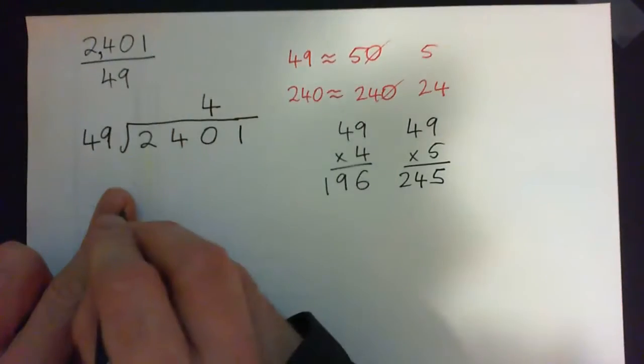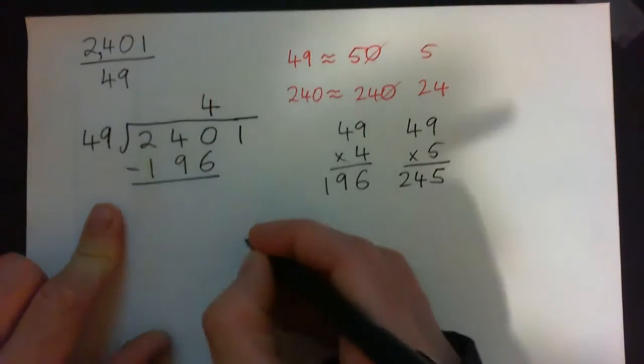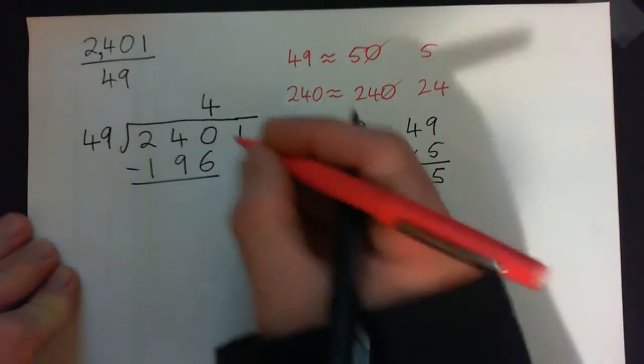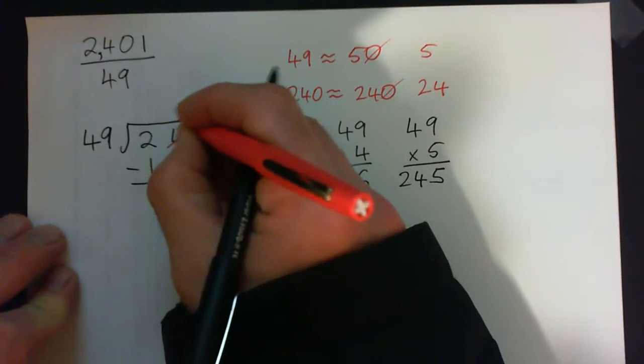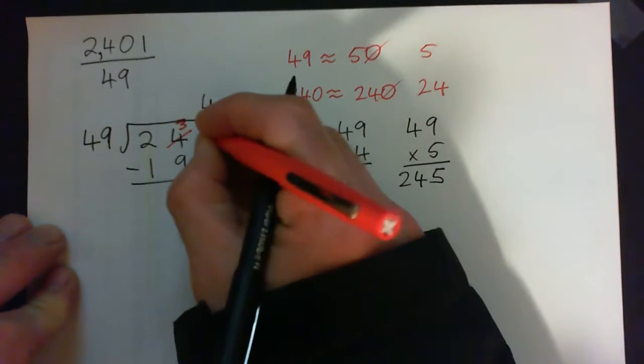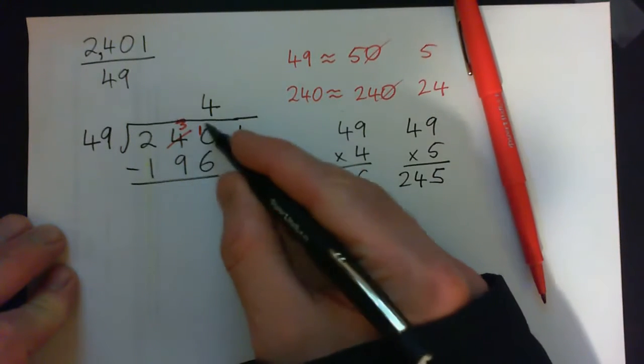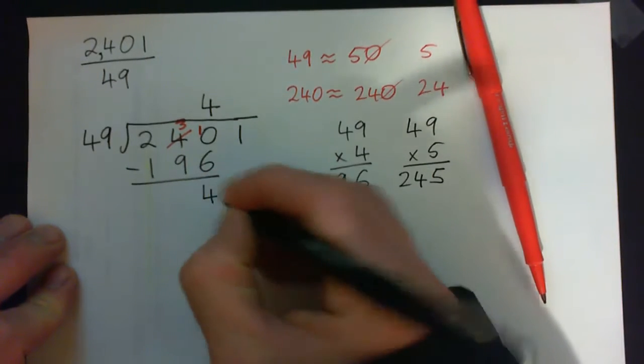So 4 times 49 is 196. Now we can subtract. Now 0 subtract 6, that's not going to work. Got to steal a 10 from over here. That becomes 3, or 30, and put the 1 over here to make 10. So now 10 minus 6 gives 4.